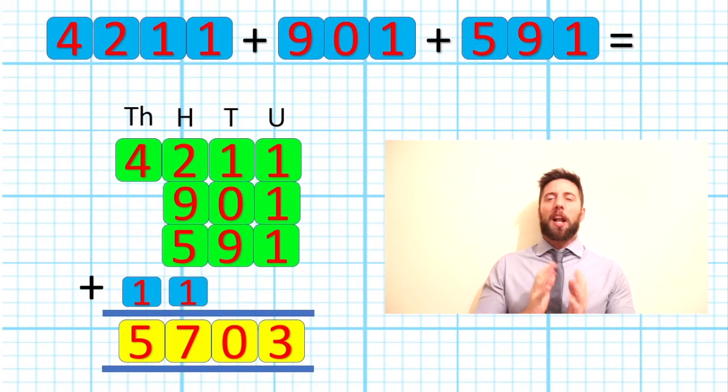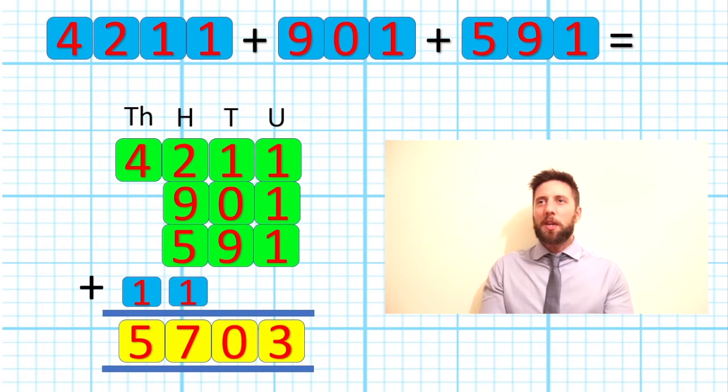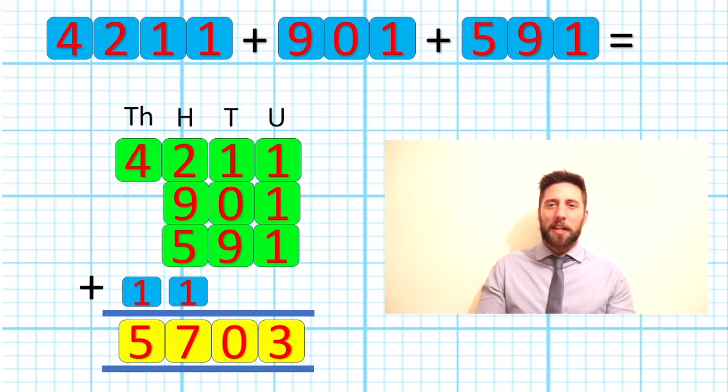Okay, so four thousand two hundred eleven add nine hundred and one add five hundred ninety-one equals five thousand seven hundred and three. Well done if you got that right. You have mastered this lesson. Well done, very, very well done, and I'm proud of you all.